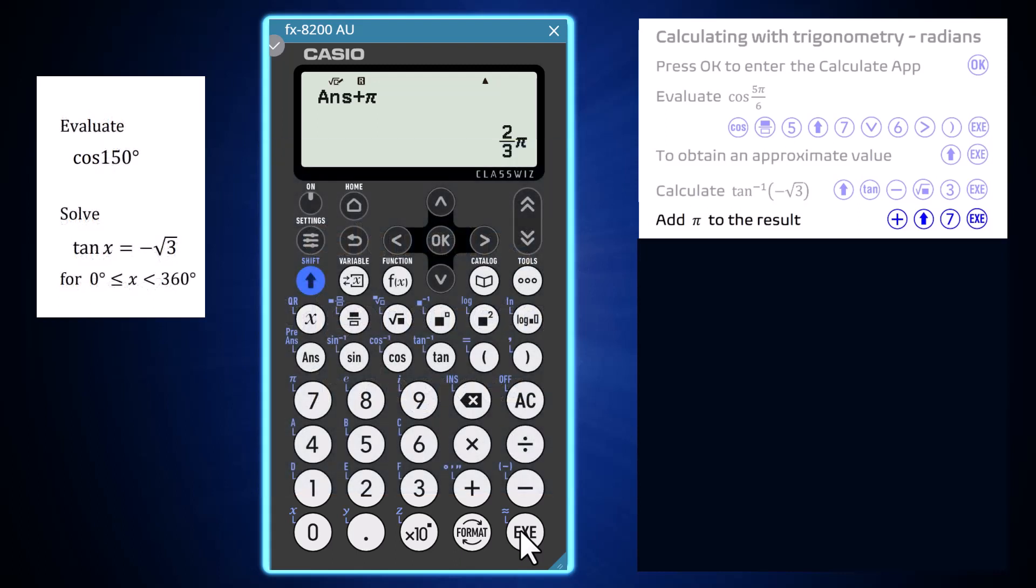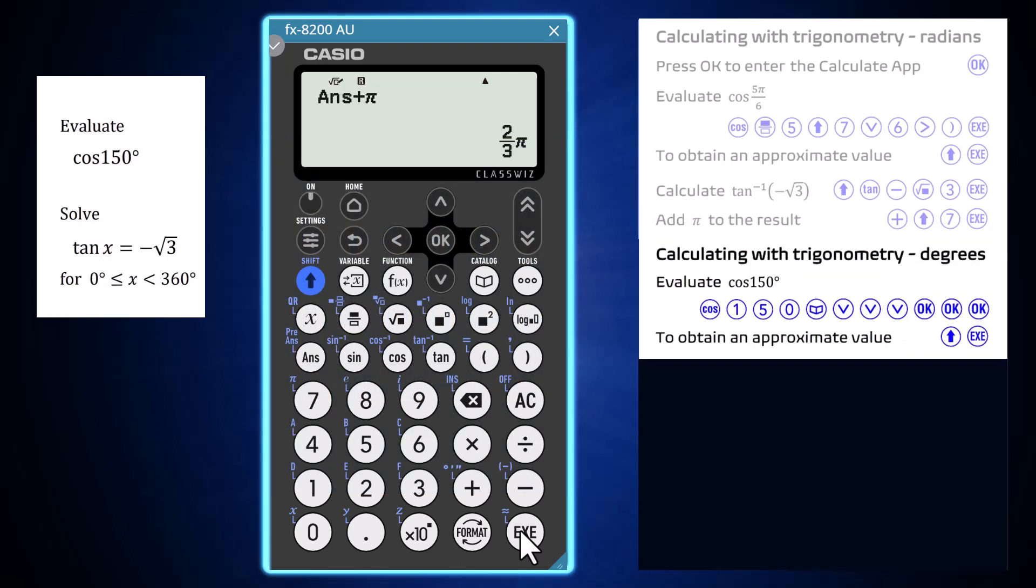Equivalent calculations can be performed in terms of angles measured in degrees. With the 8200 still set to the angle unit of radians, cosine 150 degrees can be evaluated. To enter the degrees symbol, press the Catalogue key (the one with the book on it), arrow down and press OK to open the angle/coordinate/sexagesimal settings, then press OK to enter degrees, then OK to finalize the calculation. If an approximate value is required instead, press Shift and Execute.